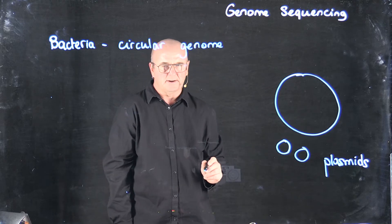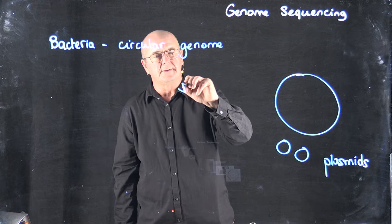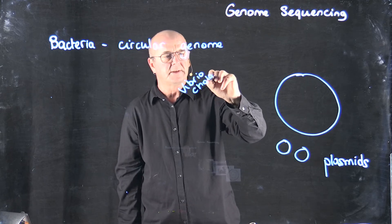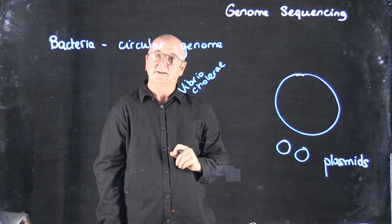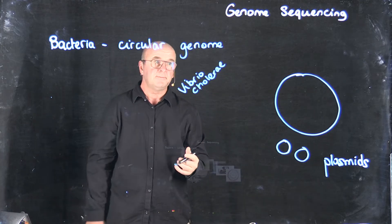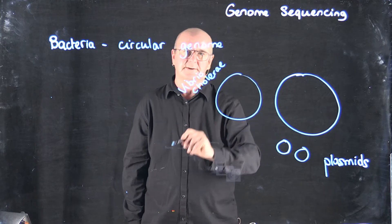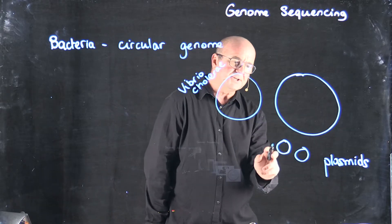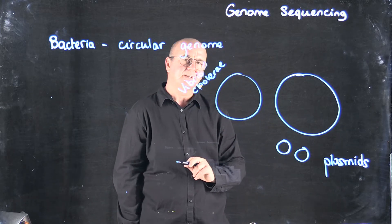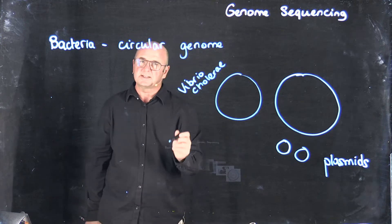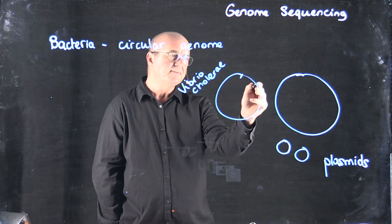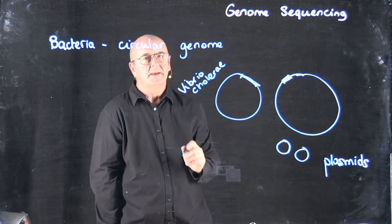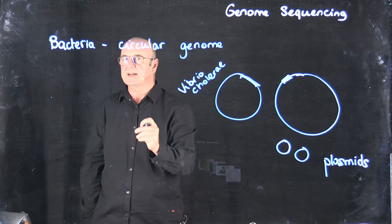Some bacteria, and the most notable example of this, is Vibrio cholera. The bacteria that causes the disease cholera actually has two circles for its genome. They're both larger than we would consider for plasmids, and the reason we consider them both to be genomes is that both of these circles contain regions of DNA, genes on them, that are essential for the bacteria to grow.